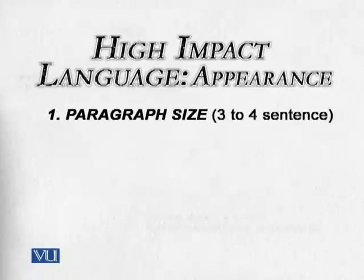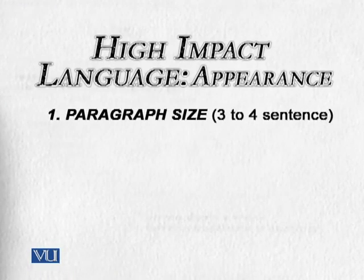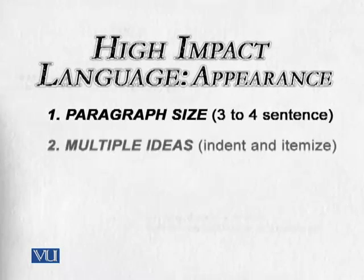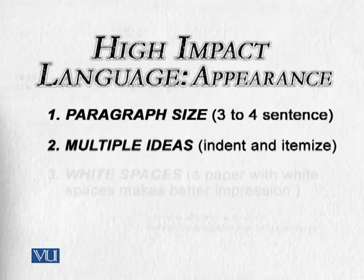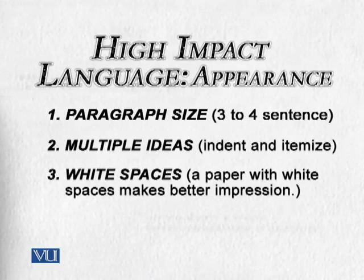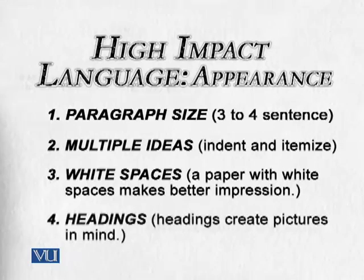If you come back to the screen, you can see in this example we checked paragraph size, introduced multiple ideas with numbered items, and used white spaces. Point three is: have lots of white spaces in your writing. And the last one is: if you can use headlines, that will be wonderful — because headlines create pictures in the reader's mind. This is what high impact language is.